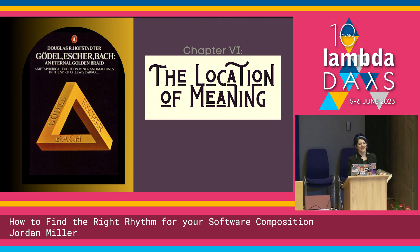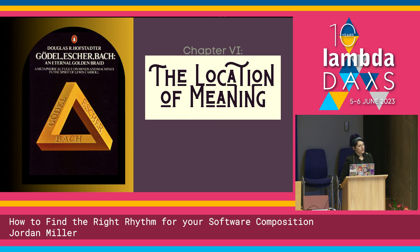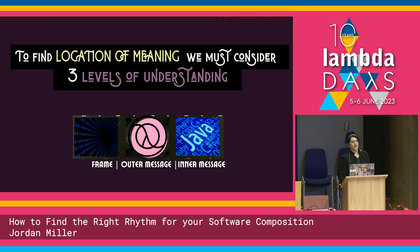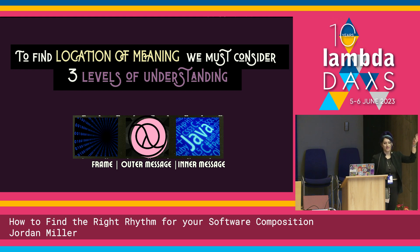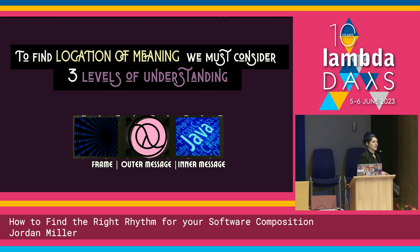Among other things, the book discusses how systems can acquire meaningful context despite being made of meaningless elements. Chapter 11 is titled 'The Location of Meaning,' and Hofstadter actually uses Bach and Cage as a juxtaposition to illustrate the difference between chaos and order. He argues that if there is an information seeker searching for the location of meaning of a message, we have at least three distinct levels of understanding to consider: the frame, the outer message, and the inner message.